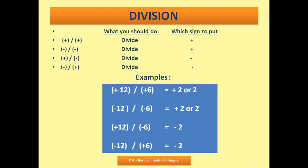Next: minus 12 divided by minus 6. 12 divided by 6 is 2. When both are negative, put a plus sign because minus minus cancels. When one is plus and one is minus, put a negative sign. For example, plus 12 divided by minus 6 gives minus 2, and minus 12 divided by plus 6 is also minus 2.